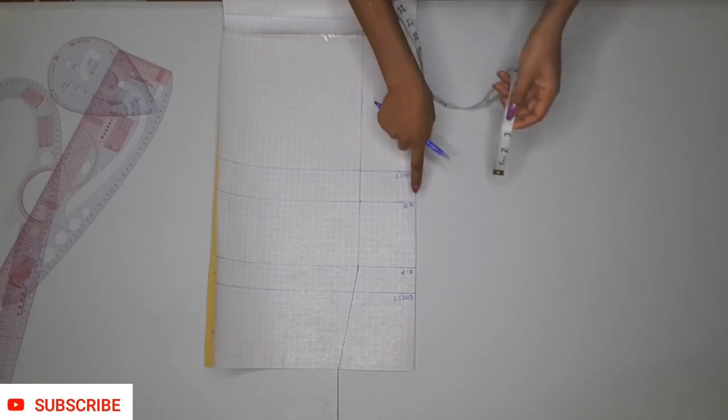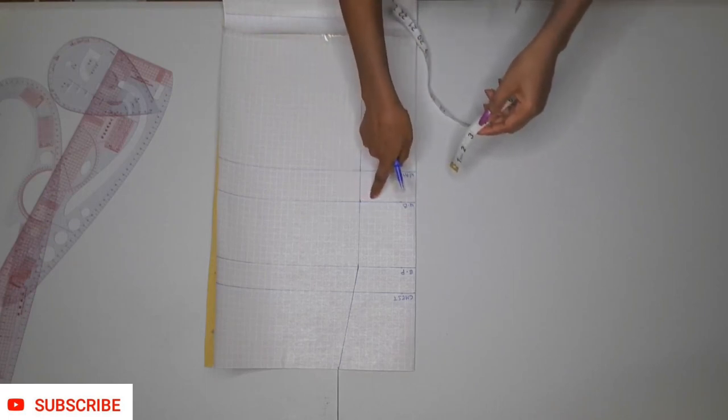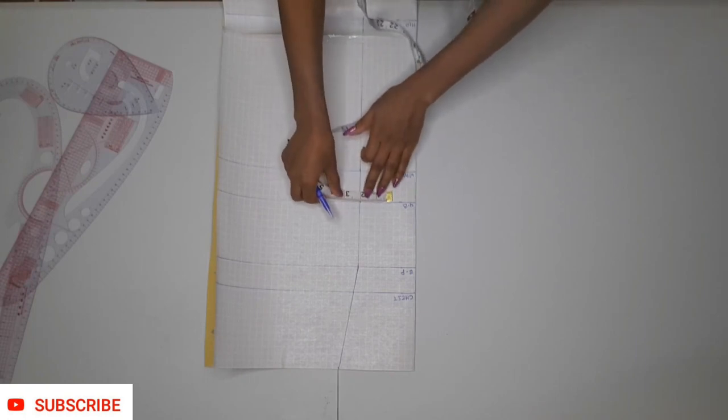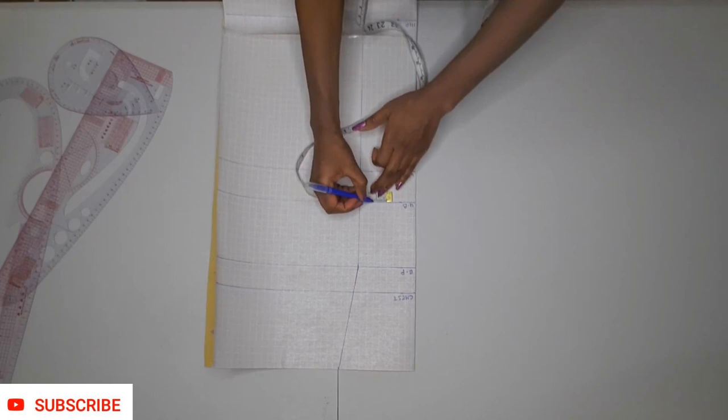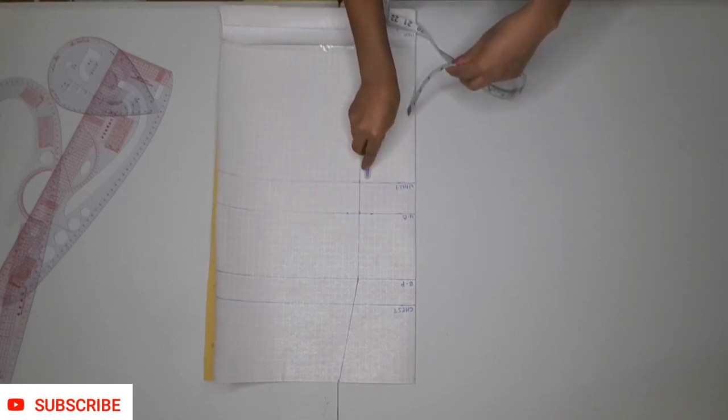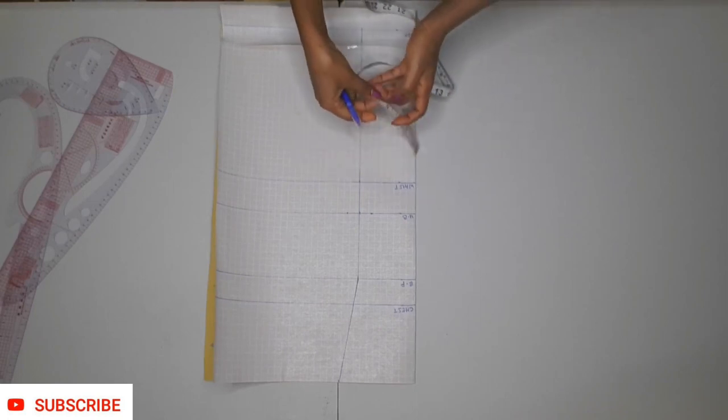Next thing, on the underburst line, take 3.5 inches to the right and 3.5 inches to the left. On the waistline, you are going to take 1.5 inches to the right and 1.5 inches to the left.